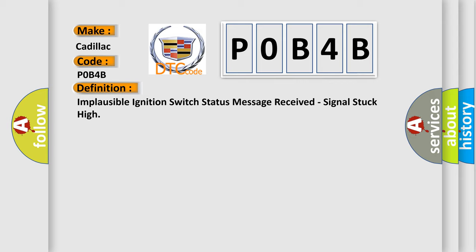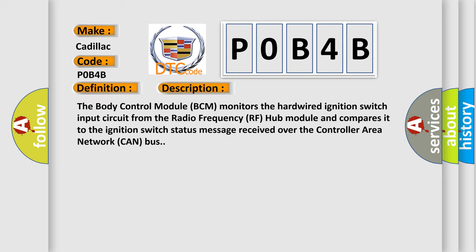And now this is a short description of this DTC code. The body control module BCM monitors the hardwired ignition switch input circuit from the radio frequency RF hub module and compares it to the ignition switch status message received over the controller area network CAN bus.